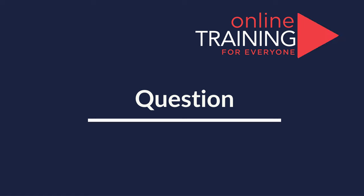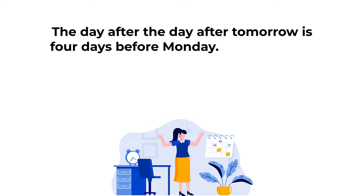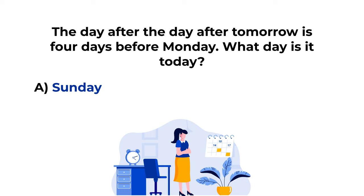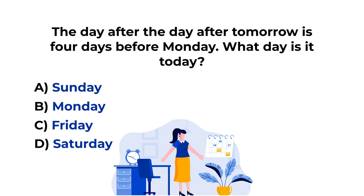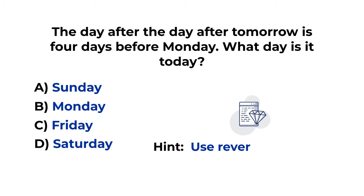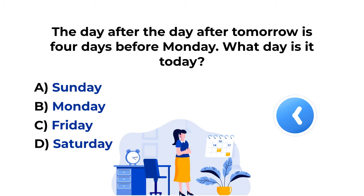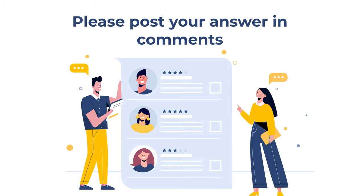Here's a practice problem for you. 'The day after the day after tomorrow is four days before Monday. What day is it today?' You have four choices: choice A, Sunday; choice B, Monday; choice C, Friday; choice D, Saturday. A hint: the best way to solve these types of problems is using reverse calculations. Post your answer and rationale in the comments. Thanks for participating and good luck.